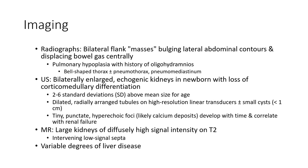Imaging findings: On radiography, bilateral flank masses distort the bilateral abdominal contour and displace bowel gas centrally. Pulmonary hypoplasia with history of oligohydramnios, bell-shaped thorax, plus or minus pneumothorax and pneumomediastinum. On ultrasound, bilaterally enlarged echogenic kidneys with pulmonary hypoplasia, with loss of corticomedullary differentiation, 2 to 6 standard deviations above mean size.